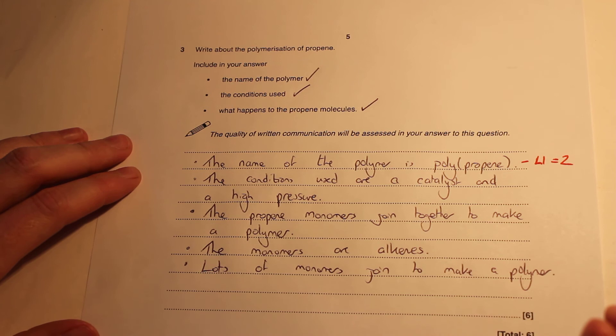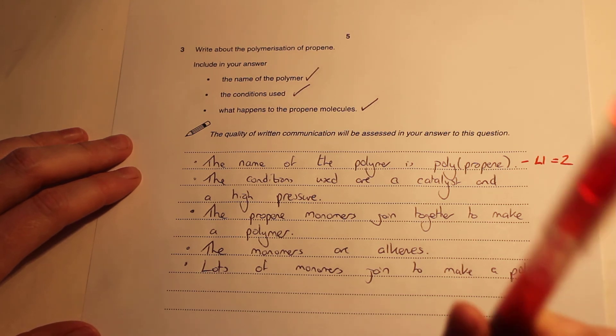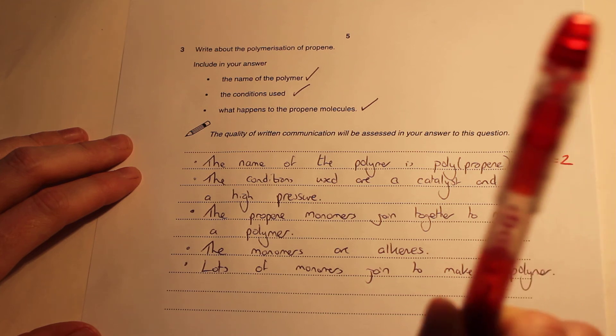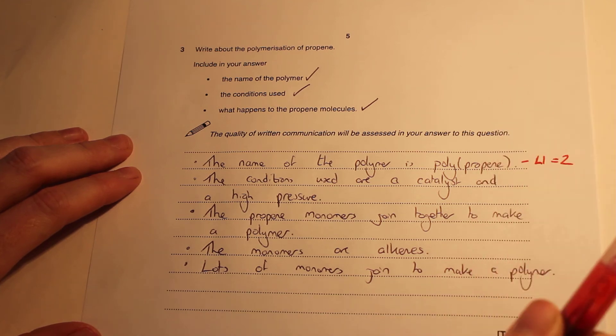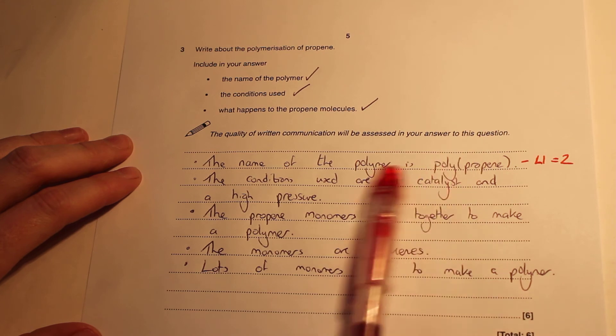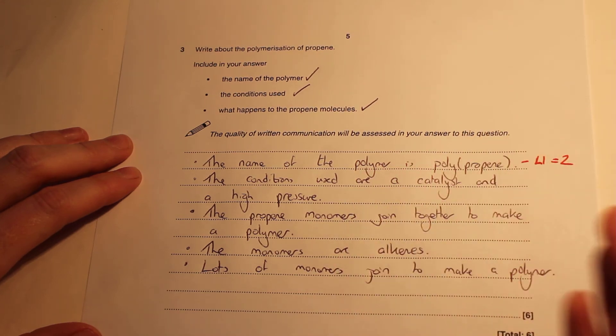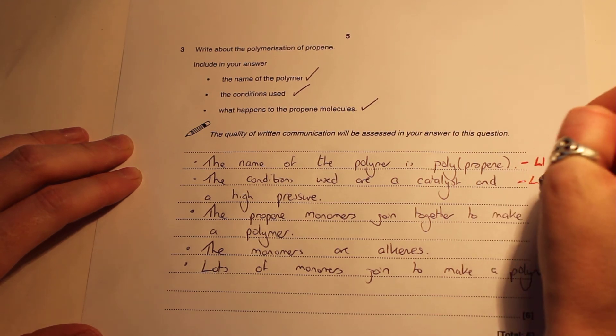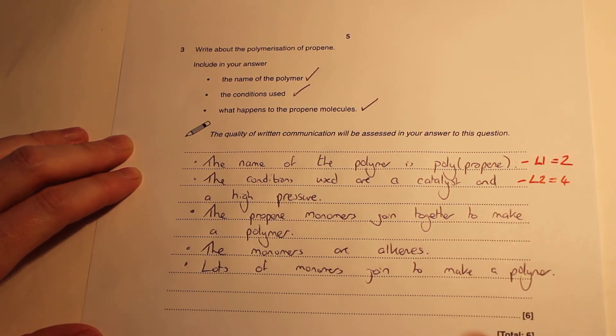For our level two answer, which gets us up to four marks, we'd have the name polypropene and the name of the condition, or we'd have the limited description. So we've got our name of the polymer and then we need either a condition or a limited description of it. Because we've got our conditions here, that takes us to four marks.